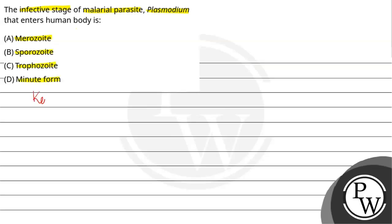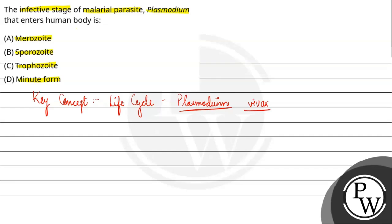What we have to use here is the life cycle. What is the life cycle of the Plasmodium? This Plasmodium vivax is the causative agent of malaria. So this is the malaria cause. Let's look at the first step in the life cycle.